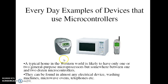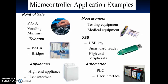These are everyday examples of devices that use microcontrollers. A typical home in the western world is likely to have only one or two general-purpose microprocessors, but somewhere between one and two dozen microcontrollers. They can be found in almost any electrical device — washing machines, microwave ovens, telephones, etc.